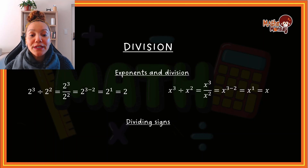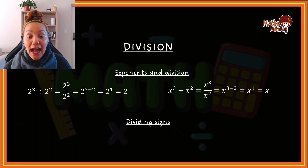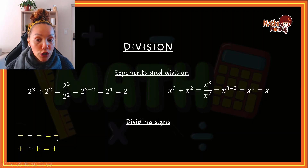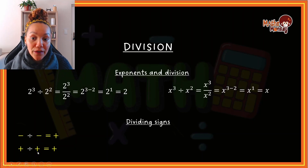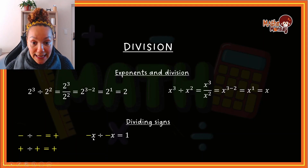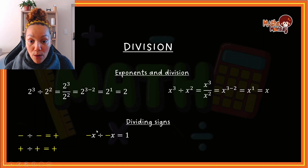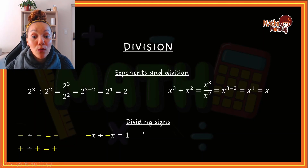When dividing signs, the signs of the question determine the sign of the answer. A negative divided by a negative gives a positive value. A positive divided by a positive also gives a positive. For example, negative x divided by negative x: the sign is positive, and x to the power of one minus x to the power of one gives x to the power of zero, and anything to the power of zero is one.